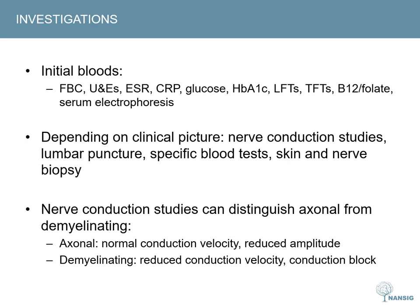Depending on the clinical picture and your suspicions, other tests may be indicated, such as nerve conduction studies, a lumbar puncture — which can be useful in GBS where it may show raised protein levels — more specific blood tests looking for antibodies against an infected organism, and a skin or nerve biopsy. Nerve conduction studies are particularly useful in distinguishing axonal from demyelinating pathologies, as the myelin sheath insulates the axon allowing faster propagation of electrical signals, so demyelinating pathologies will show a reduced conduction velocity.